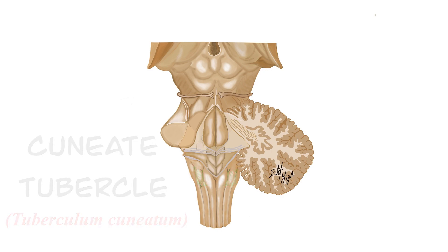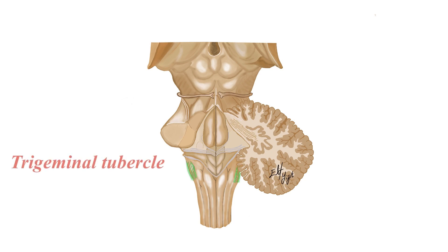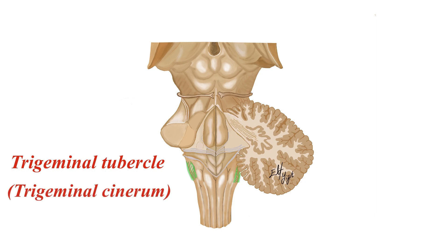Lateral to each cuneate nucleus there are prominences called the trigeminal tubercle, also known as tuberculum trigeminale or tuberculum nuclei. The trigeminal tubercle is formed by the spinal nucleus of the trigeminal nerve, also known as nucleus spinalis nervi trigemini, which is a fifth cranial nerve nucleus.